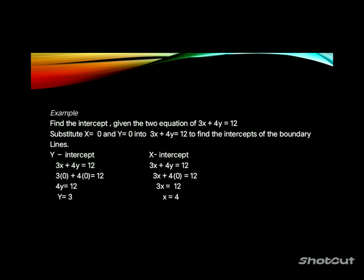Substitute x equals zero and y equals zero into 3x plus 4y equals 12 to find the intercepts. For the y-intercept, set x equals zero: 3(0) plus 4y equals 12, so 4y equals 12, giving y equals 3. For the x-intercept, set y equals zero: 3x plus 4(0) equals 12, giving x equals 4.